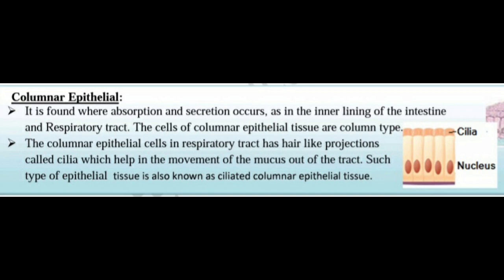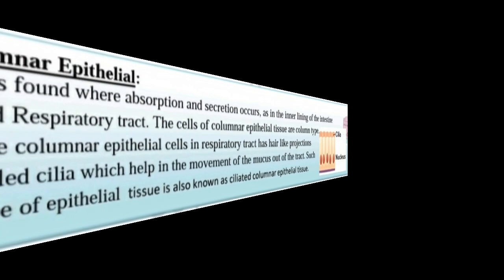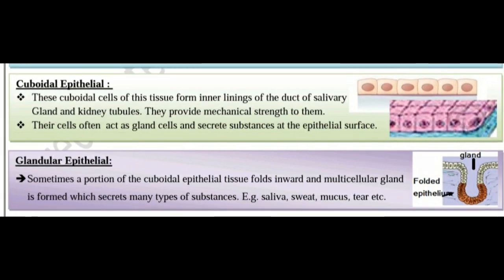Columnar epithelial is found where absorption and secretion occur, as in the lining of the intestine and respiratory tract. The cells of the columnar epithelial tissue are column-type. The columnar epithelial cells in the respiratory tract have hair-like projections called cilia, which help in the movement of mucus out of the tract. Such tissue is also known as ciliated columnar epithelial tissue.